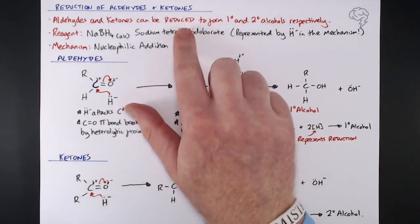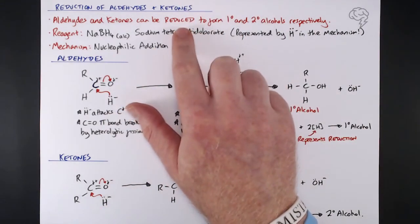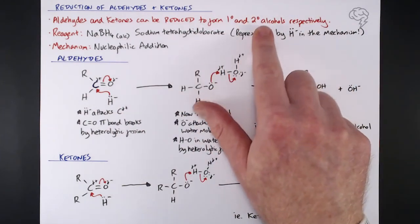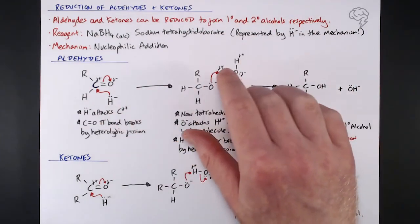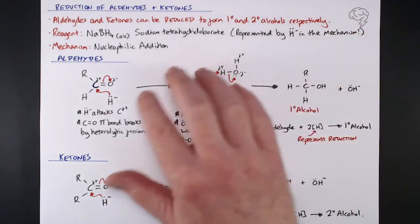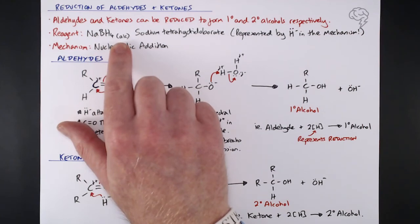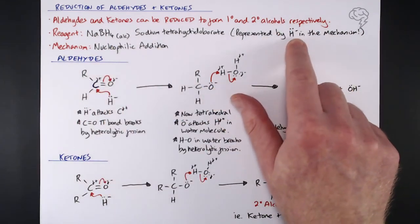Overall, know that we can reduce aldehydes and ketones, we can reverse the oxidation process to go back and reform our alcohols again. In terms of working your way around organic synthesis, sometimes you'll need to do this. Our reagent is NaBH4 in alcoholic solution, represented by that H minus with the lone pair in the mechanism.